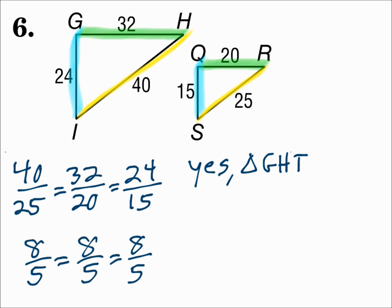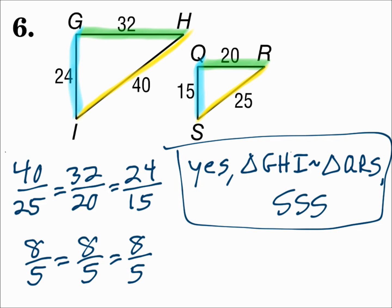Triangle GHI on the left is similar to triangle QRS — G matches Q, H matches R, and I matches S — because of side-side-side similarity. Remember when checking for triangle similarity: angles have to be congruent, and sides have to be proportional.